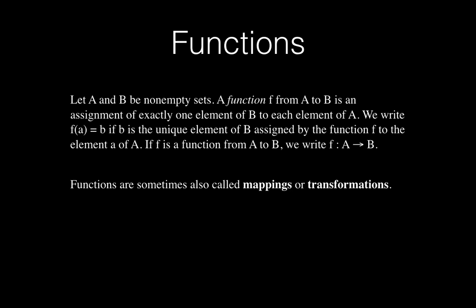If b is the unique element of B assigned by function f to the element a of set A, and f is a function from A to B, we write f: A → B. Functions are also sometimes called mappings or transformations, because you map each element of set A to an element of set B, with exactly one element of B assigned to each element of A.